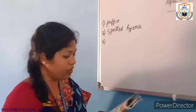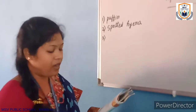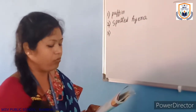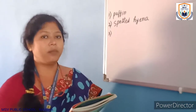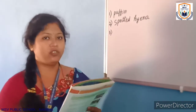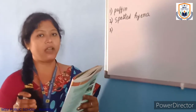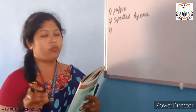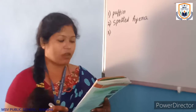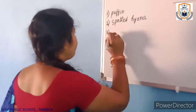Which animals talk to each other by an elaborate language of clicking sounds? The first language of that animal is a clicking sound. That is the dolphin — dolphins communicate using clicking sounds.